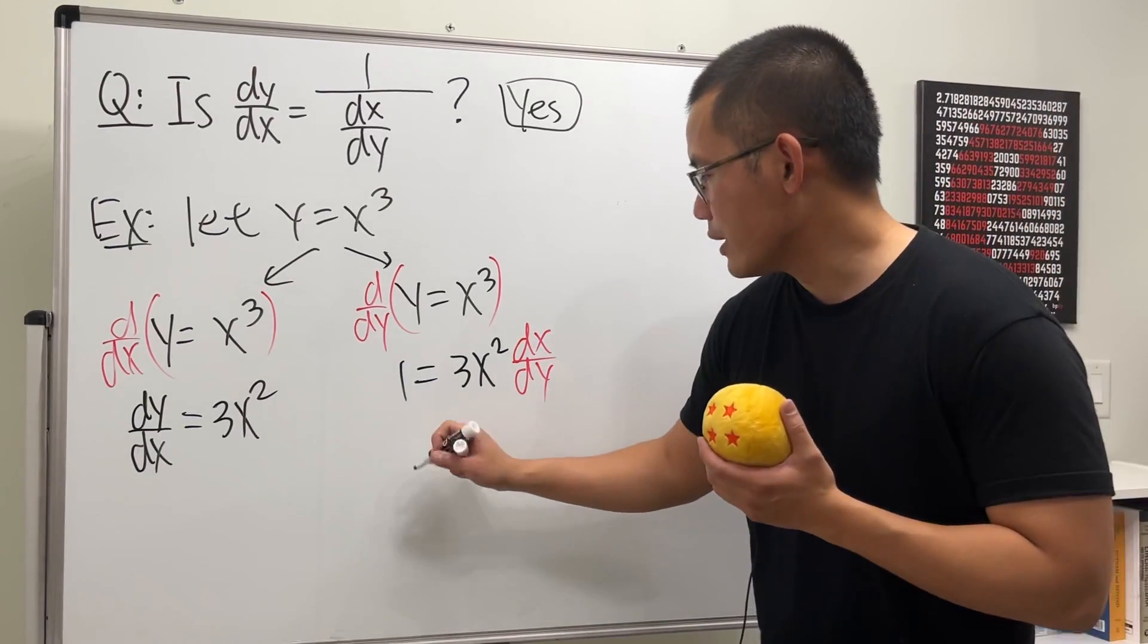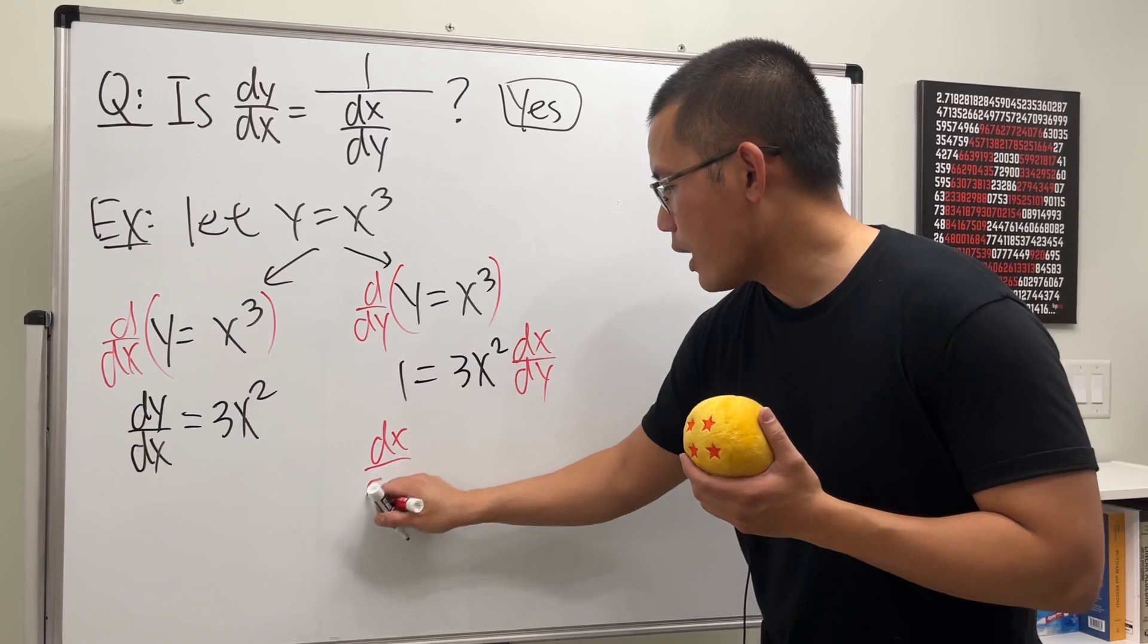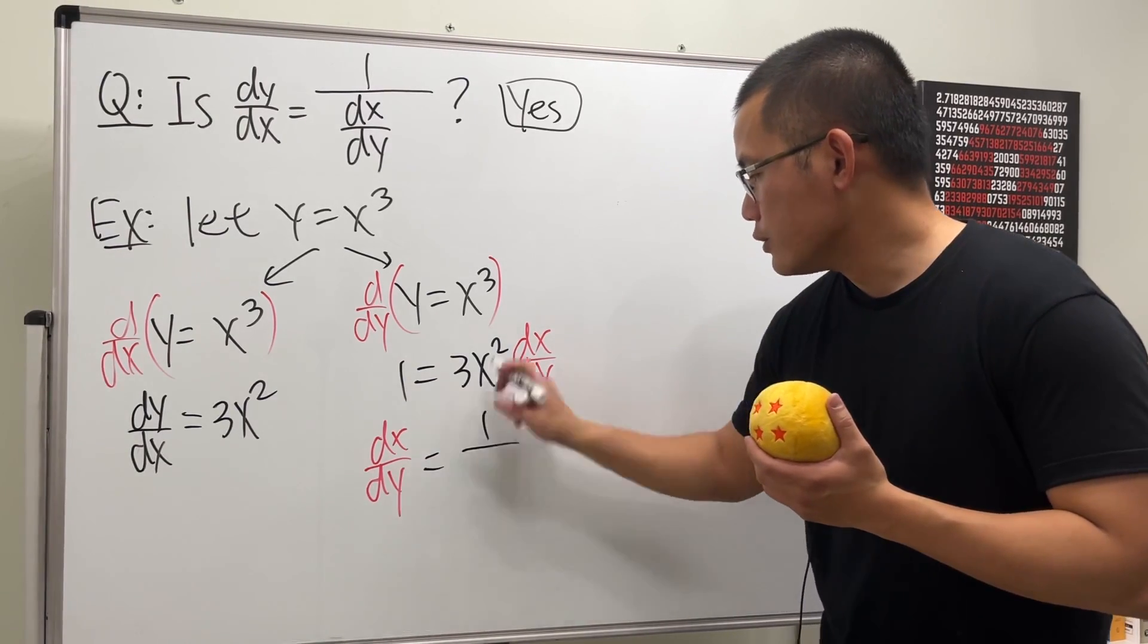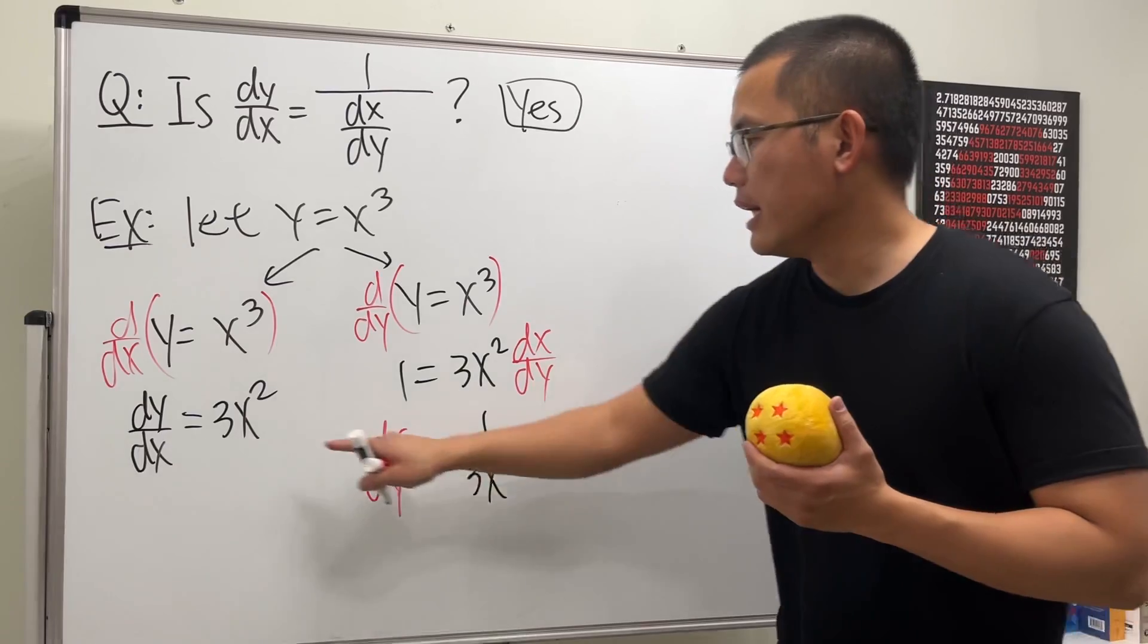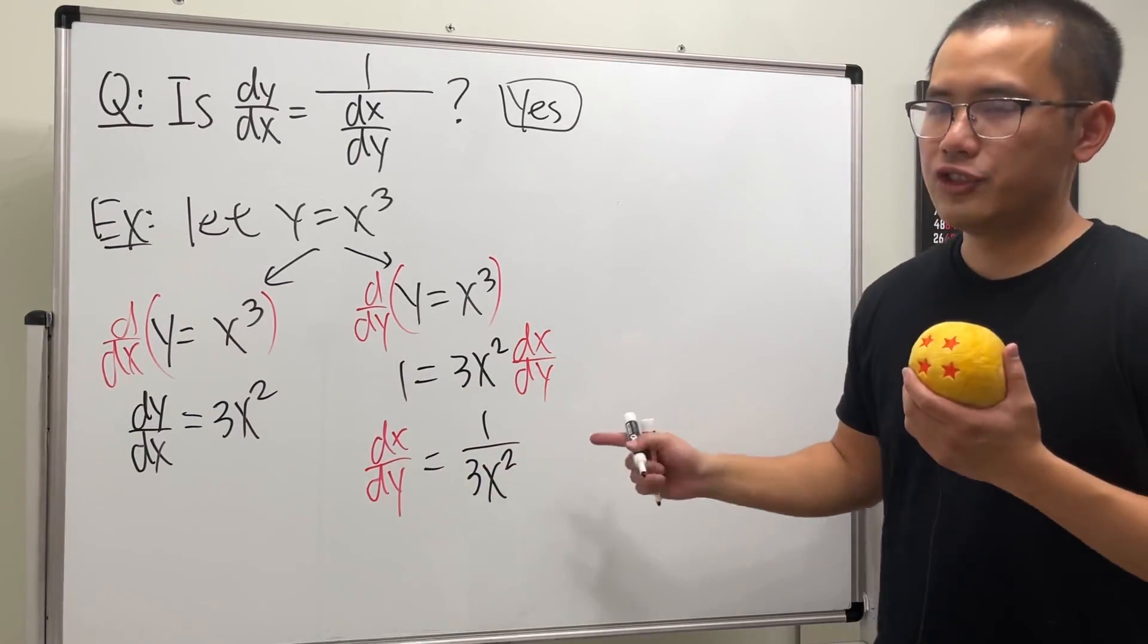We can just divide that on both sides, so we see that dx/dy is just equal to 1 over 3x squared. As you guys can see, they are reciprocals of each other. That's why it's yes.